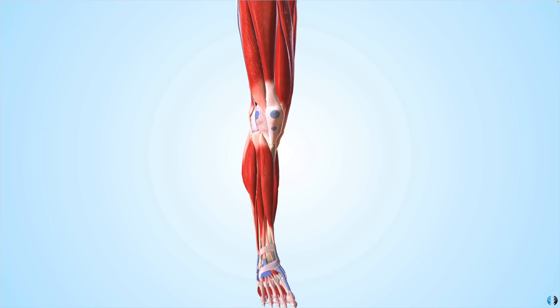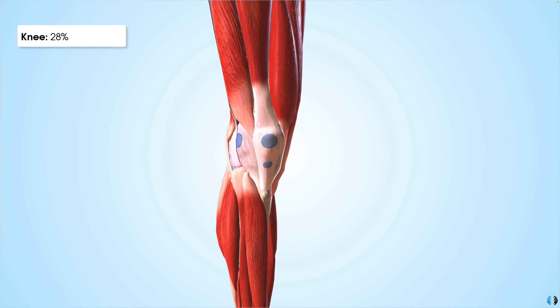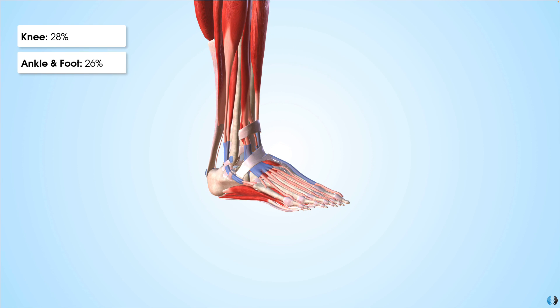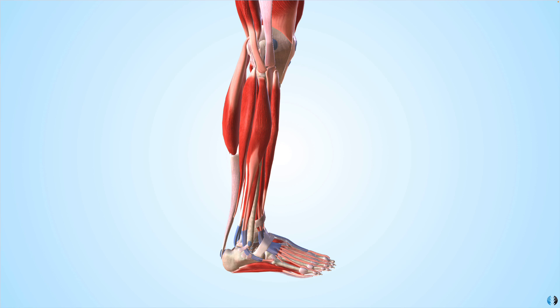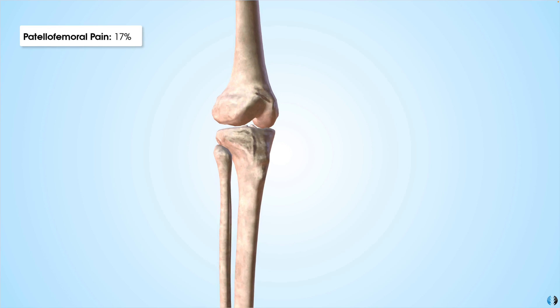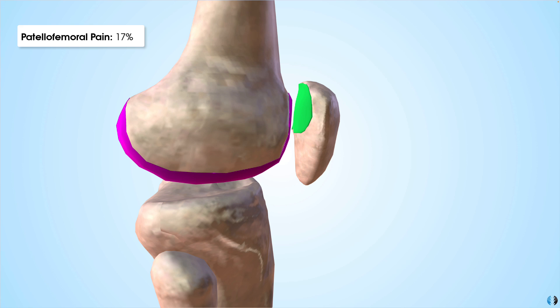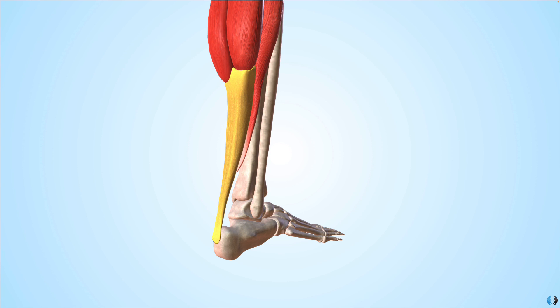Let's start off with what are some of the key injuries that we see in runners. What are the most common areas to injure in running? Studies have shown that the knee is the most commonly injured joint at 28%, then we have the ankle and foot coming in at 26%, followed by the shank region at 16%. The most common specific injury amongst runners is patellofemoral pain coming in at 17% — no wonder this condition is commonly referred to as runner's knee. Then we have Achilles tendinopathy coming in at 10%, and in third, medial tibial stress syndrome coming in at 8%.